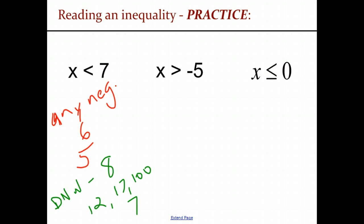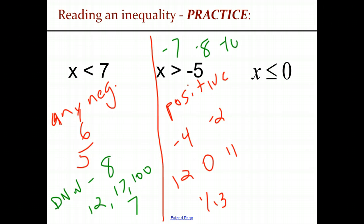Going on to the second example, x is greater than negative 5. Any positive number here works, and also any number between negative 5 and 0. So we have things like negative 4, negative 2, 12, 0, 11, and 1, 13. The numbers that don't work are just anything that is less than negative 5. So negative 7, negative 8, negative 10, etc.